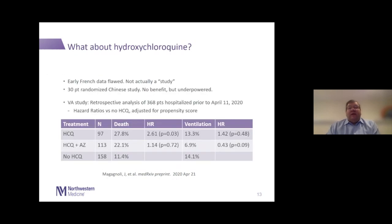Finally, a few words on hydroxychloroquine, which has been a lot in the news. The early French so-called study was quite flawed — it compared two groups at two different institutions and concluded benefit, but had many issues. A small randomized trial in China showed no benefit but was clearly underpowered. Most recently, a retrospective analysis of VA hospitalized patients looked at patients treated with hydroxychloroquine, hydroxychloroquine plus azithromycin, or no therapy — and overall found a higher risk of death in the hydroxychloroquine group, not seeing increased benefit.